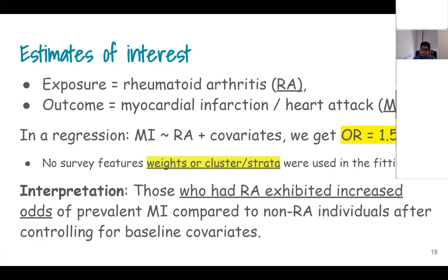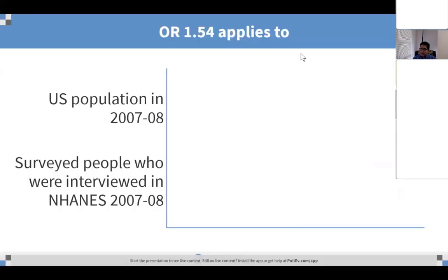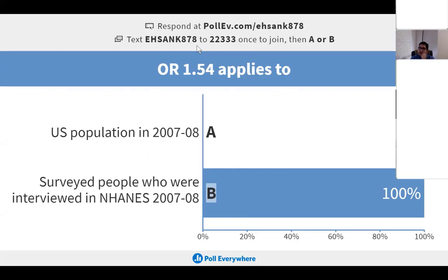Consider a scenario where the exposure is rheumatoid arthritis and the outcome is myocardial infarction. You run a logistic regression and get an odds ratio of 1.54 without using any weight, cluster, or strata — just a regular logistic regression. In that case you are trying to make a comment about the sample you have collected.